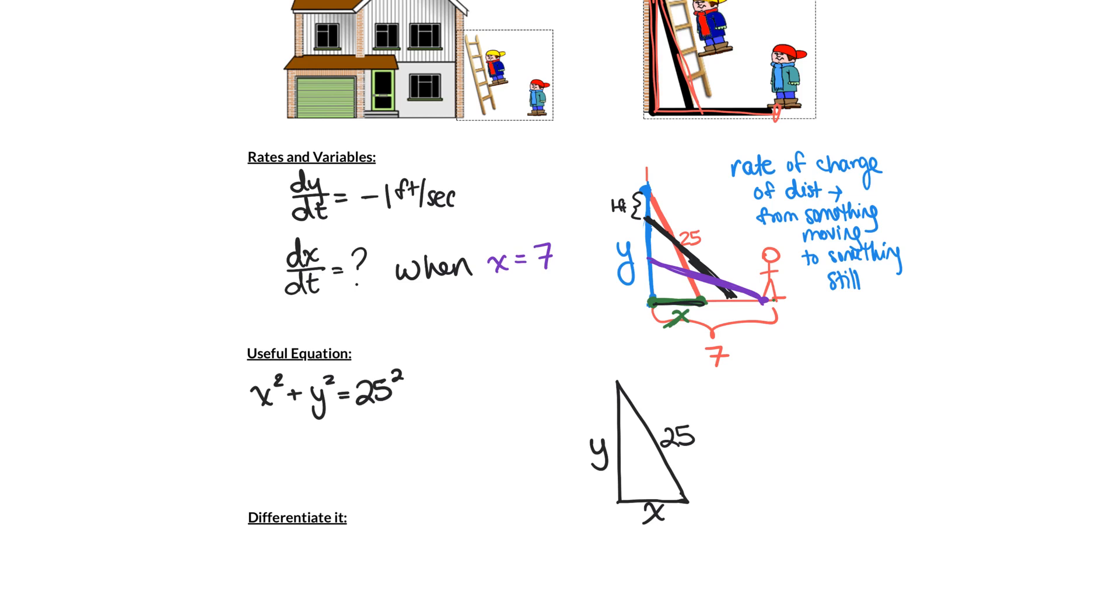And we check—we make sure we don't have any extra variables. The only constants we have in here, the 25 is true, it's 25 throughout the entire problem. Alright, so now we can move forward.